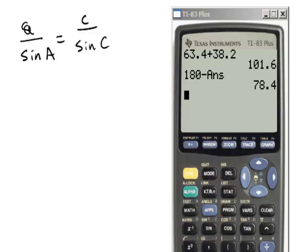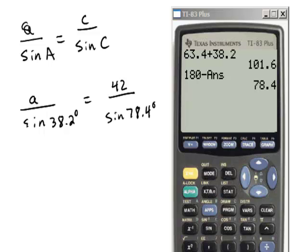Now replace the information. We don't know A, then we have the sine of angle A, which is 38.2 degrees, equals C, which is 42, divided by the sine of 78.4 degrees.